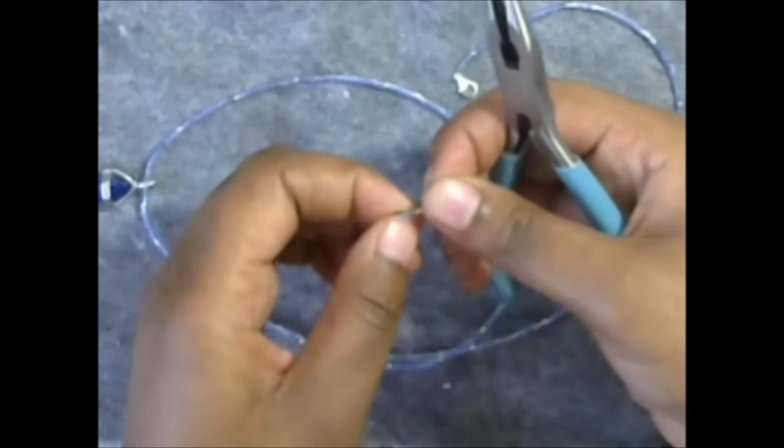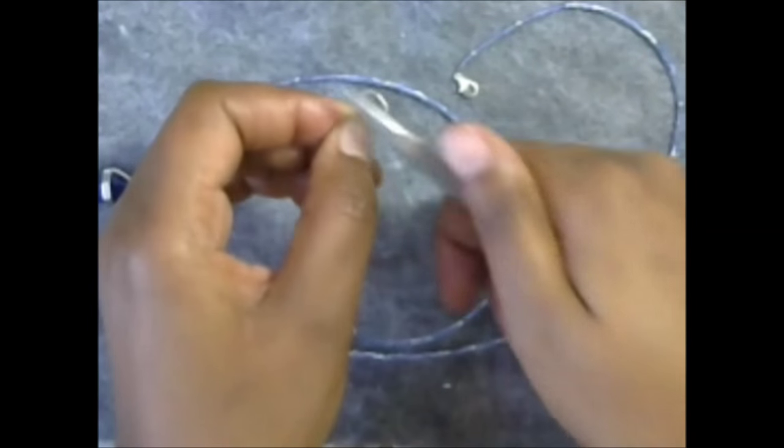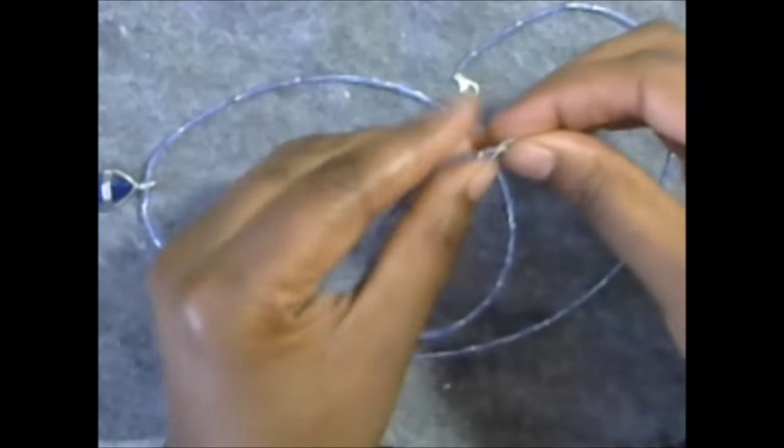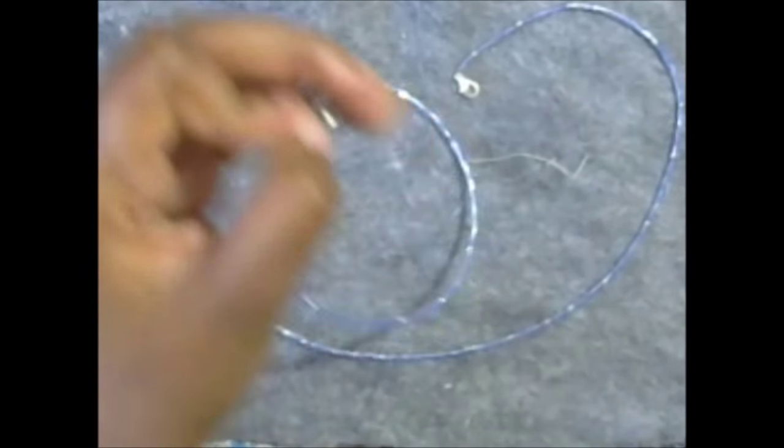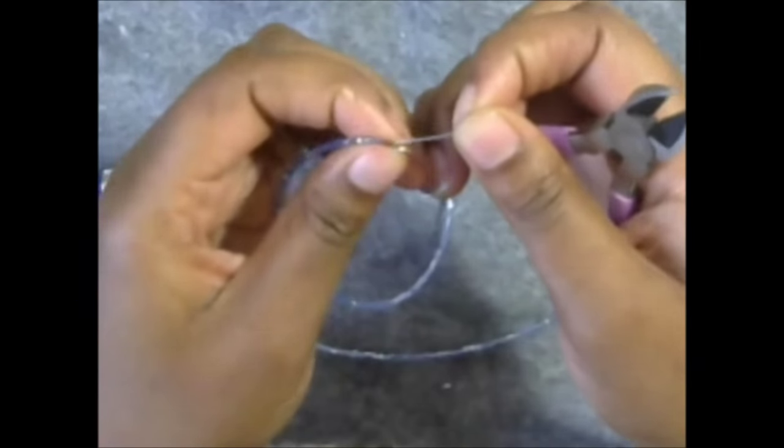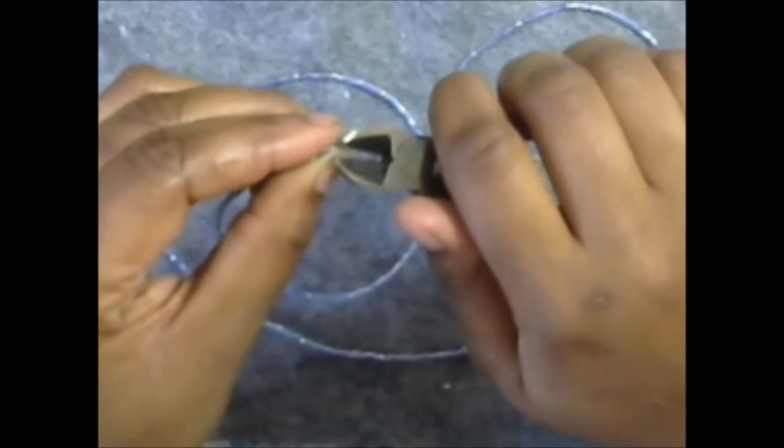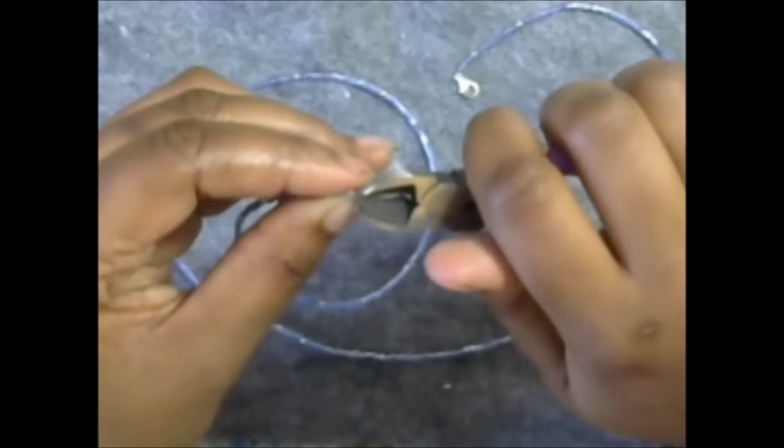Then we're going to take it and we're going to give it a crimp. Ready? One, two, three, crimp. So you just press it down. And then again, we're going to take our excess wire and we are going to trim that off. Just like that. As close as we can.